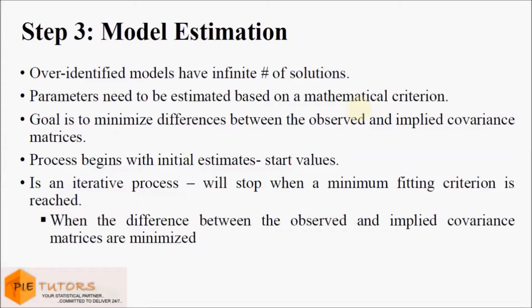The goal in SEM estimation is to minimize the difference between the observed and implied covariance matrix. The implied covariance matrix are those that are specified within the model, and the observed covariance matrix is the matrix determined by the observed variables.